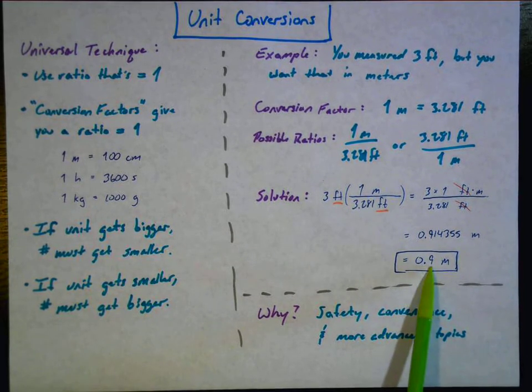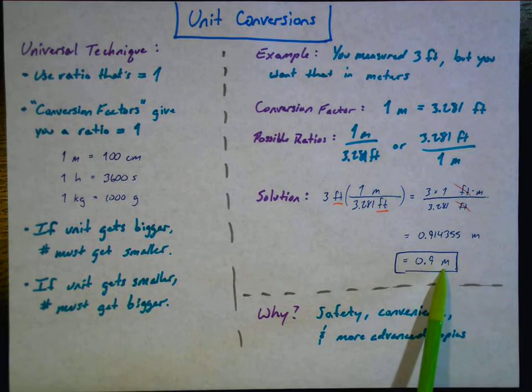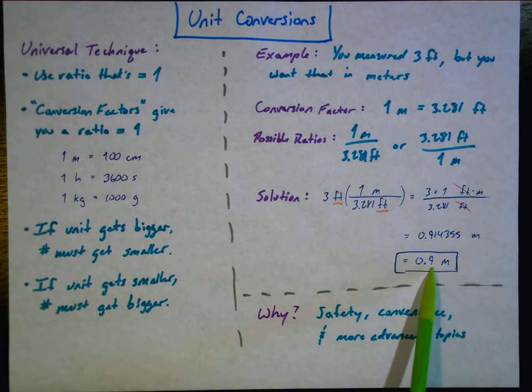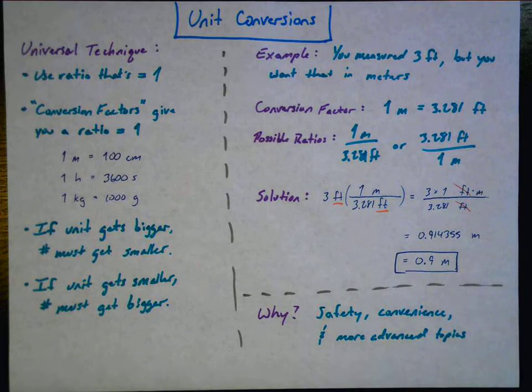And there it is. 0.9 meters. So three feet is equal to 0.9 meters after rounding. So that's how this works. And this can be applied to any kind of conversion you need to do. Thanks for watching. I'll catch you next time. Bye.